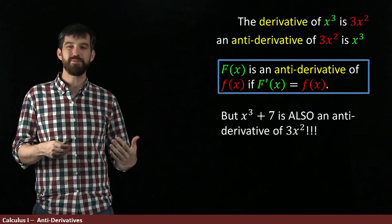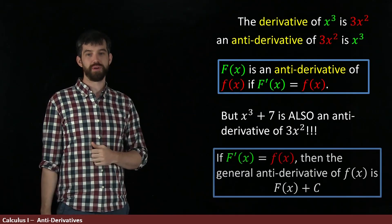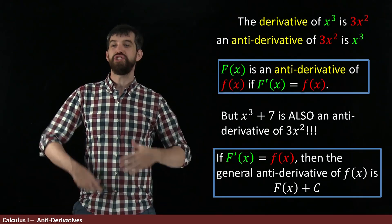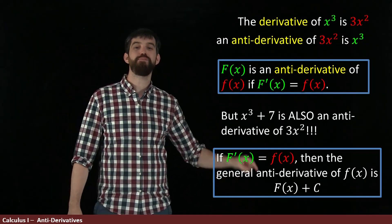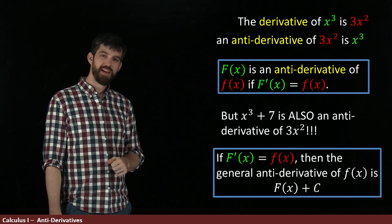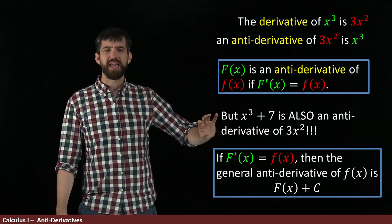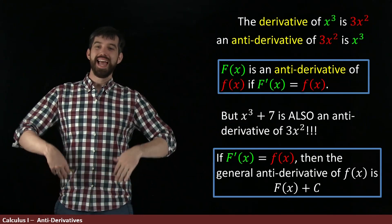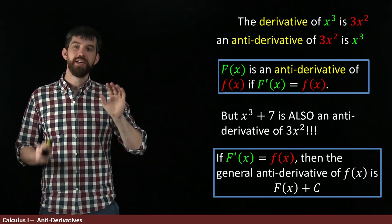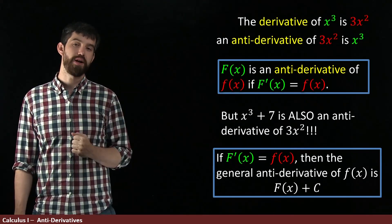So we sometimes say this by talking about the general antiderivative. And we'll say that if you take the derivative of the big F and you get the little f, then the general antiderivative is this big F plus any arbitrary constant. So we have to be a little careful with our grammar. If you have a specific one like x cubed plus 7, you say that is an antiderivative because there's all sorts of them. But then you can refer to the general antiderivative when you write it this way, F of x plus an arbitrary constant, c.